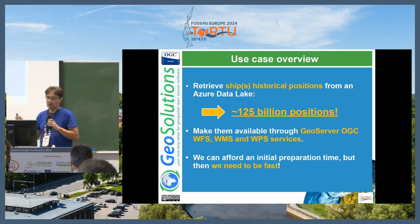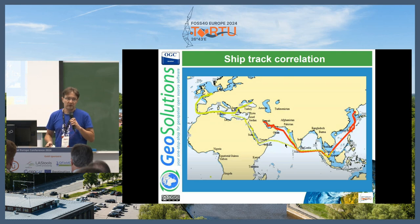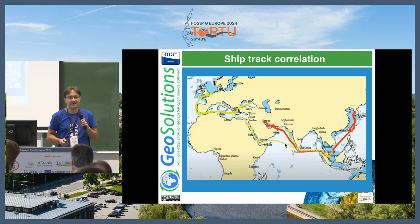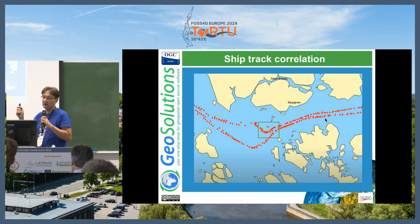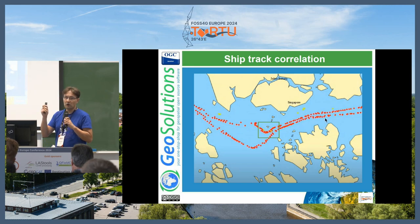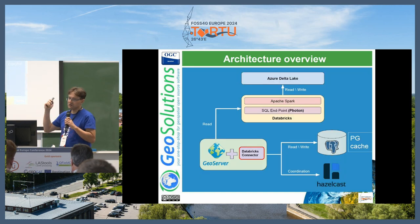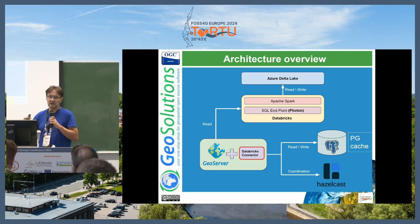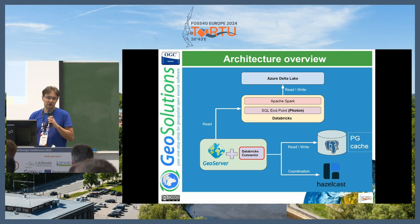Another use case: historical positions. We have all the positions for the past seven years. What can you do with it? For example, ship correlation: have two ships met at sea to do something maybe illegal, like washing the tanks of a petroleum vessel? We have the ability to choose and export from an Azure data lake the positions of the ships, correlate them through an algorithm, and figure out whether they had an occasion to meet at sea or not. We have an Azure data lake and an Apache Spark process that does the extraction. This extraction can be slow — 20 to 30 seconds — and then we have a cache in PostgreSQL to do interactive mapping out of it.